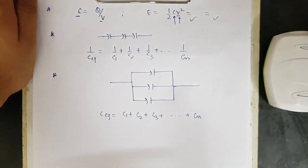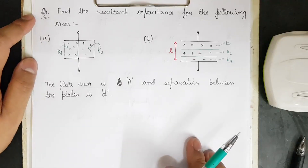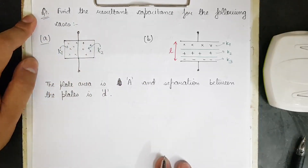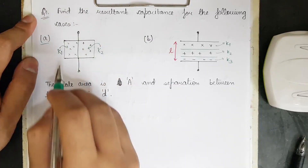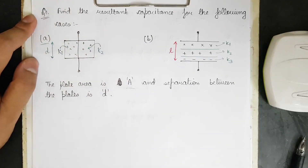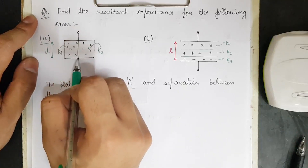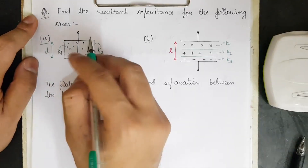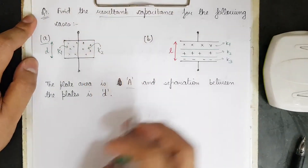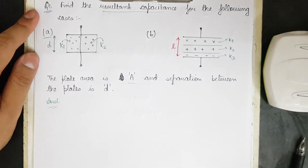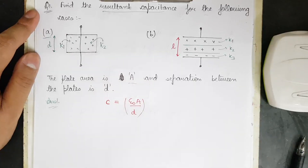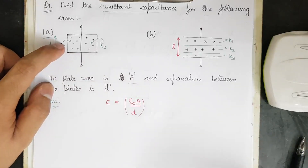Now let's begin with the first question — finding the resultant capacitance for given cases. In the first case, we have two plates with plate area A and separation d. Dielectric slab number one has dielectric constant k1 and slab number two has dielectric constant k2. The formula to use is C = ε₀A/d.